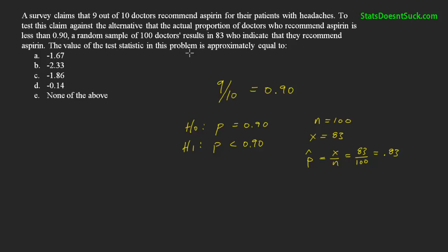The value of the test statistic in this problem is approximately equals to... Okay, so this is pretty simple. Considering that we are testing a single proportion, our test statistic looks like this: it's p-hat minus p, over the square root of p times 1 minus p, over n.